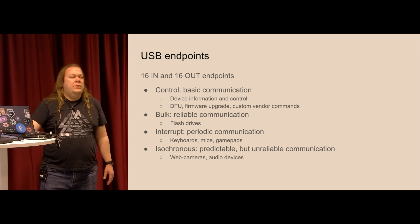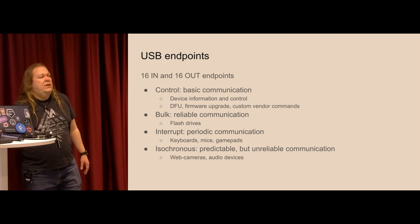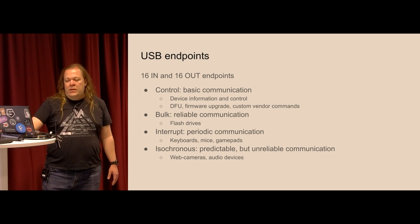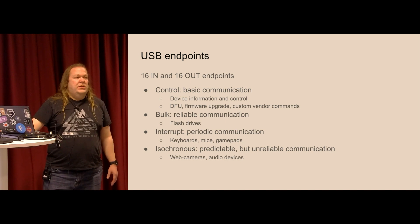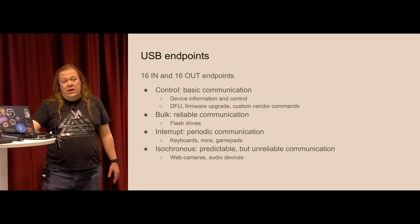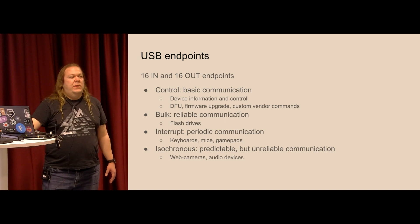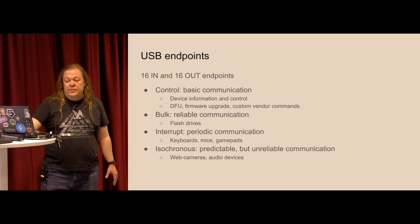Interrupt endpoints are mostly used for slow polling things — for example, keyboards, mice, and gamepads which report that buttons are pressed or released. Then we have the most complex type: isochronous endpoints, used for predictable but not reliable communication. When you want to make something really predictable you can't make it reliable. This means you always have some bandwidth allocated in advance, and requests are executed with roughly the same latency — important for streaming things like webcams and audio devices.